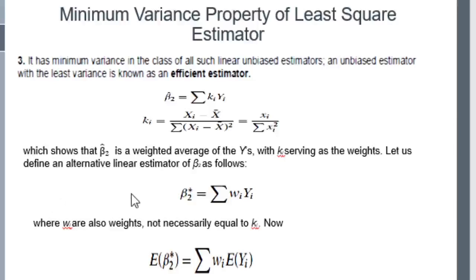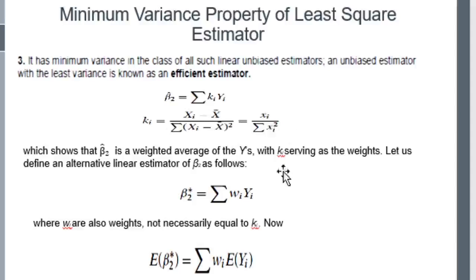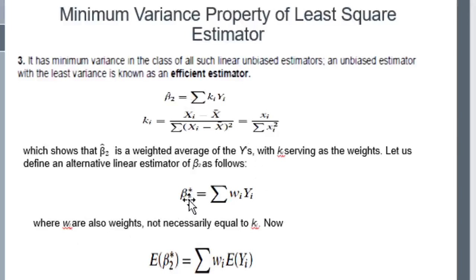Let us define an alternative linear estimator of beta2. While beta2-hat is defined as sigma(ki * yi) where ki = xi / sigma(xi²), let us define another estimator, say beta2-star, as sigma(wi * yi), where wi is the weight analogous to ki but with a different value. Beta2-hat comes from one sample and beta2-star from another.